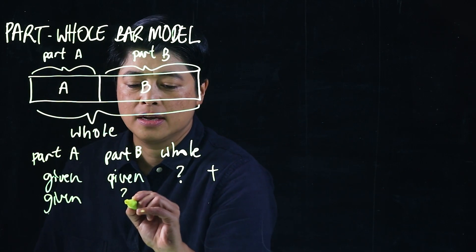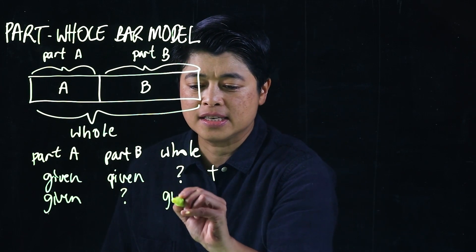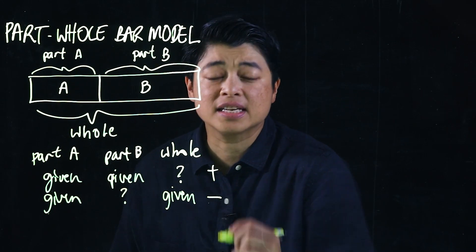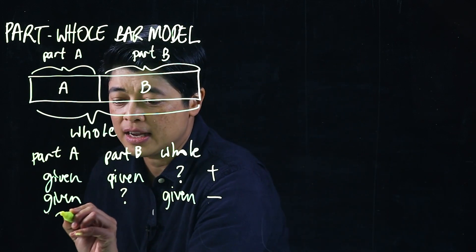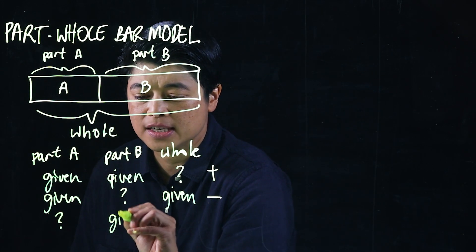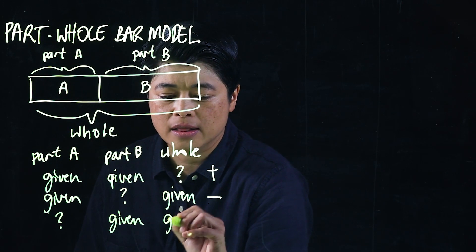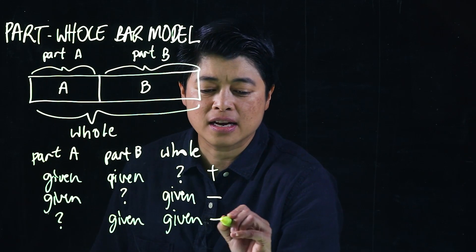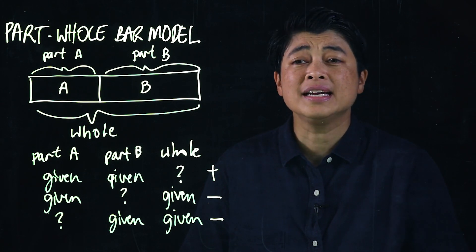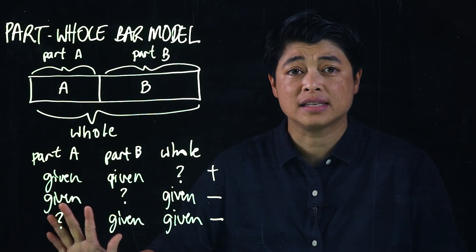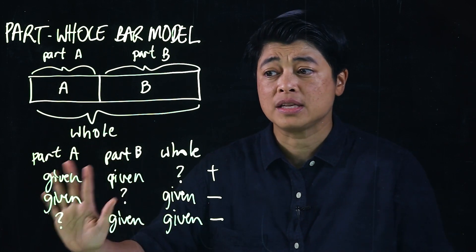If part A is given, part B is a question mark, and the whole is given, that makes it a subtraction problem. Finally, if the whole is the question mark, part A is given and part B is given, that as well is a subtraction problem. This is not taught to the kids, therefore it's important that we teach our kids this strategy.